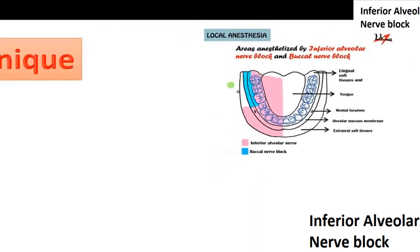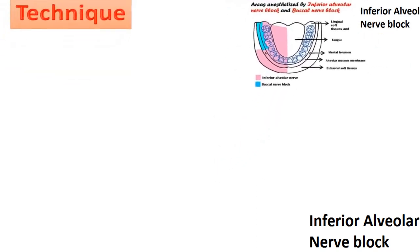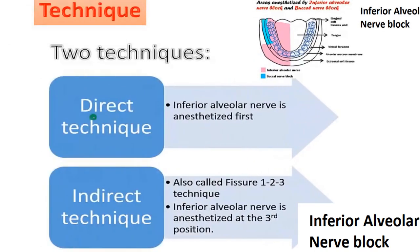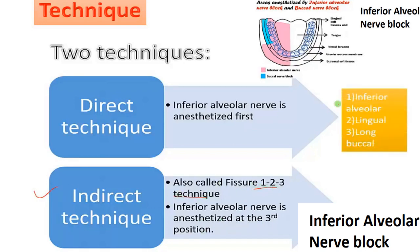The anatomical landmarks include the external oblique ridge and internal oblique ridge. In the direct technique, the inferior alveolar nerve block is given first, then the lingual, then the long buccal. In the indirect technique, the long buccal is given first, then the internal oblique ridge is used, followed by the inferior alveolar nerve. The sequence is reversed between the two techniques.